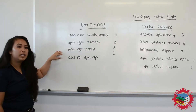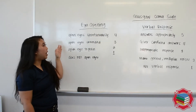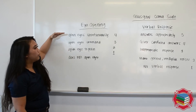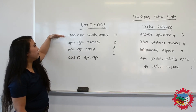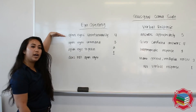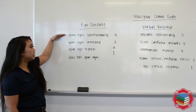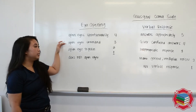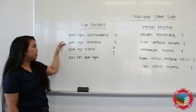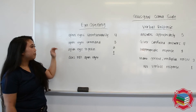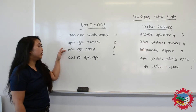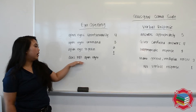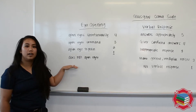First on the scale is eye opening. The scale goes 4, 3, 2, 1. For 4, eyes are going to be open spontaneously. For 3, it's eyes open on command. For 2, eyes open to painful stimulus. And for 1, eyes do not open at all.